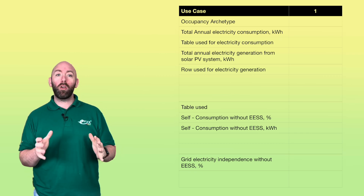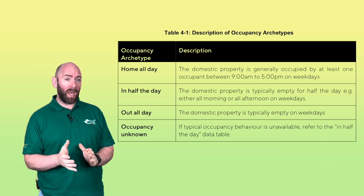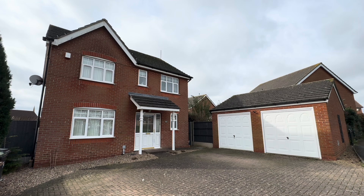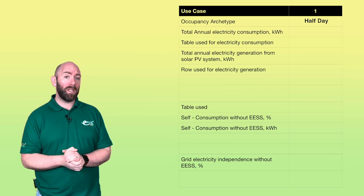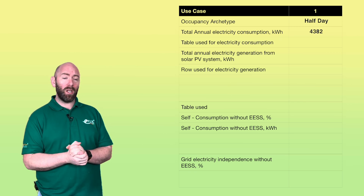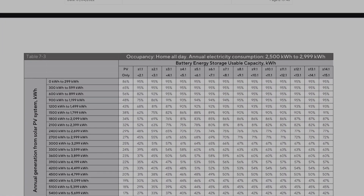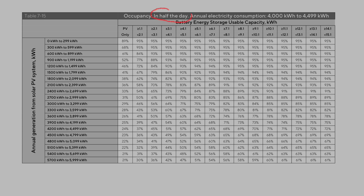Looking at table 6.1, we first determine the occupancy archetype from table 4.1: home all day, in half the day, out all day, or occupancy unknown. Our customers are in for half the day, so that's what we enter. Next we need the annual consumption of the property — from the smart meter data report in the previous video, the customer has an annual consumption of 4,382 kilowatt hours. We use this figure and the property archetype to navigate to the correct lookup table, which is table 7-15: in half the day with a consumption range of 4,000 to 4,499 kilowatt hours.